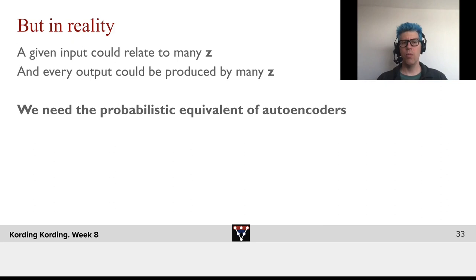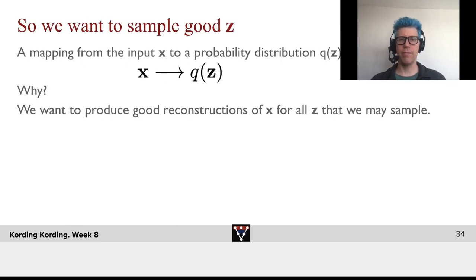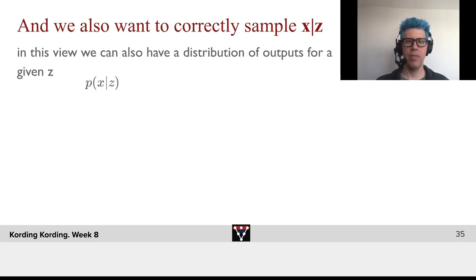In that sense, if we want to produce meaningful probability distributions, we need the probabilistic equivalent of autoencoders. So we want to sample good z, a mapping from input x to a probability distribution q of z. We want to produce good reconstructions of x for all the z that we may sample, all the z that we might want to consider. And we want to also correctly sample x given z.